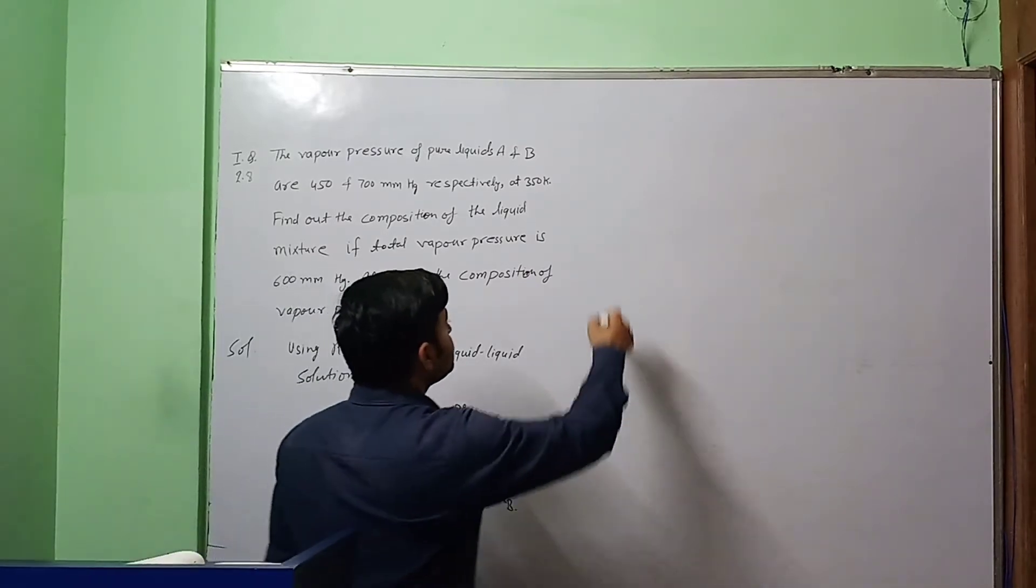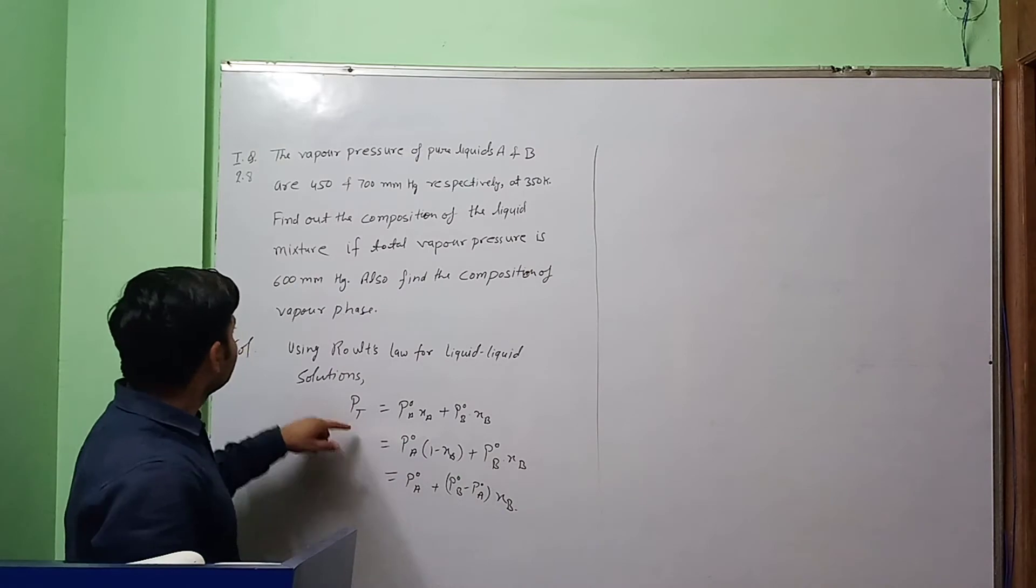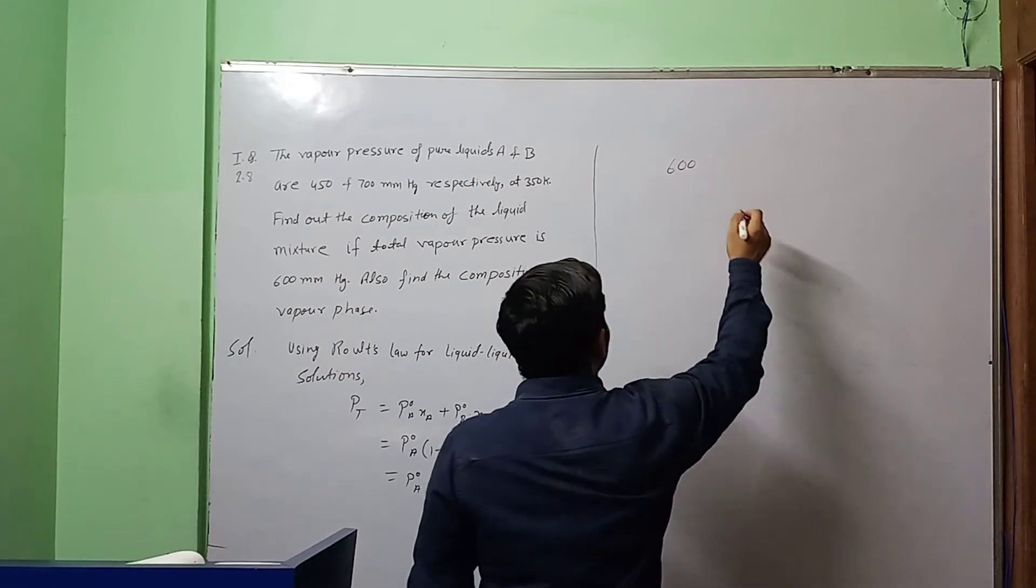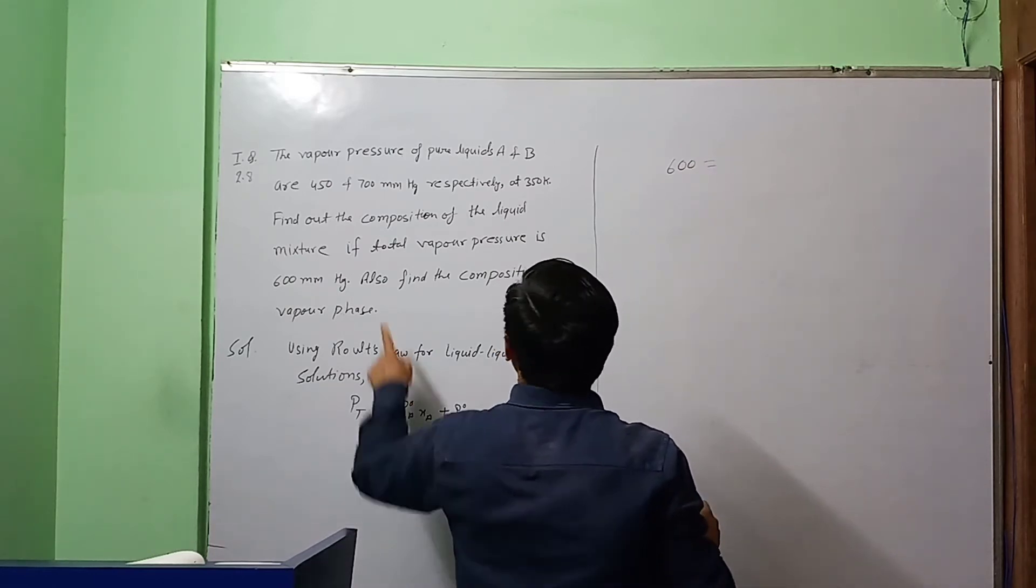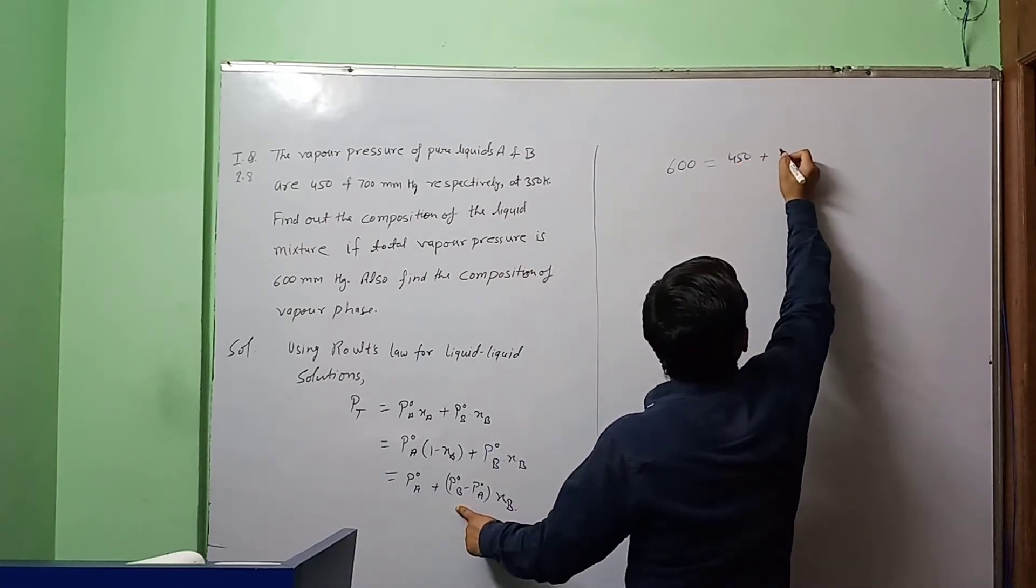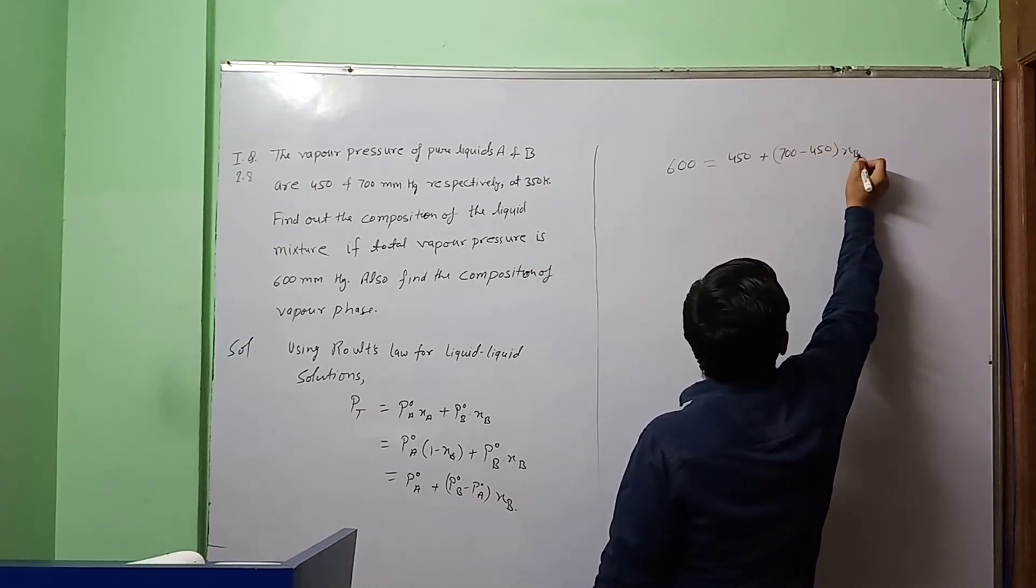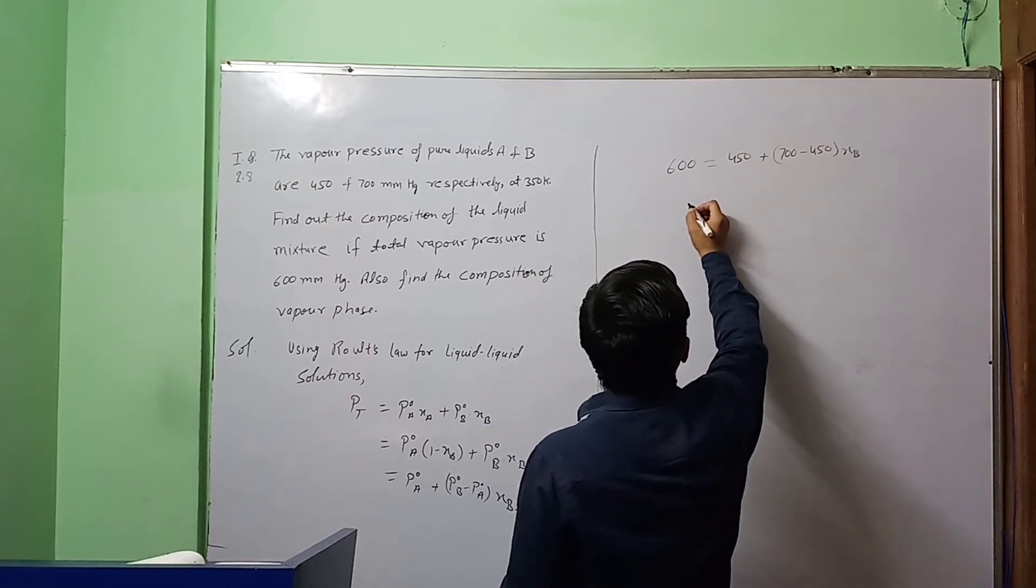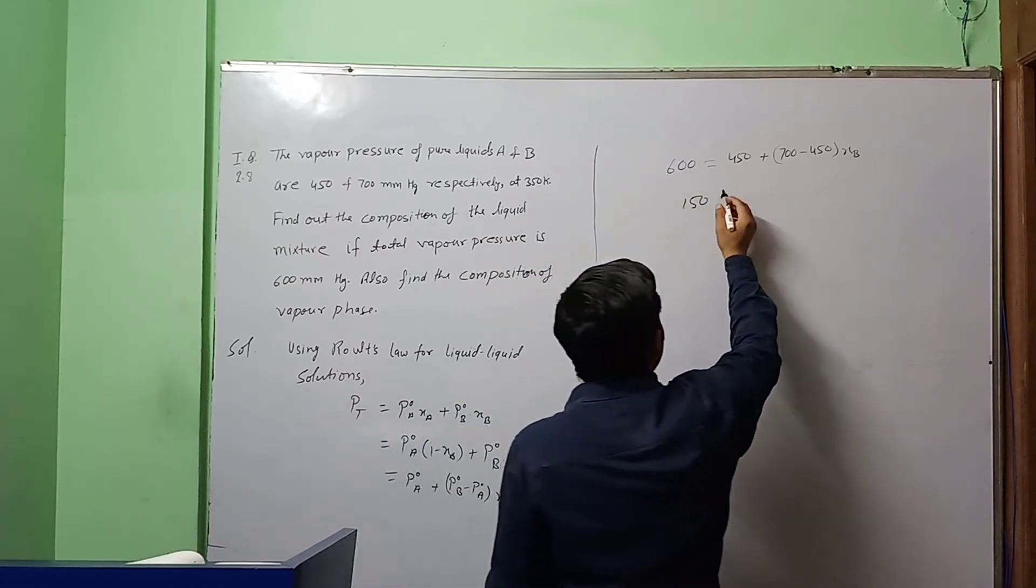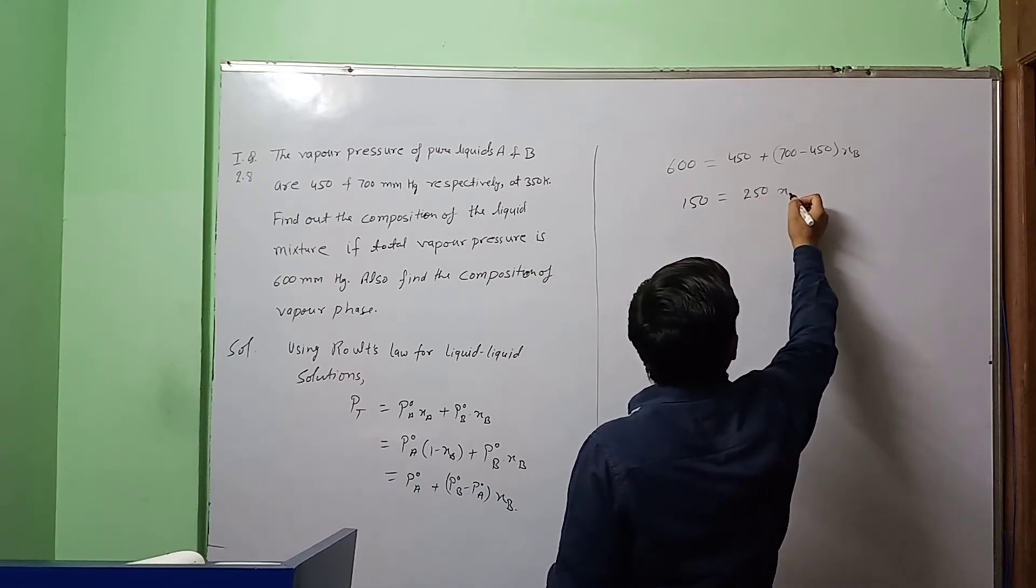Let us now put the values in the expression. Total vapor pressure of solution is given 600 mm Hg. 600 equals P0A, it is given 450, plus P0B minus P0A means 700 minus 450 into XB. We can subtract 450 from 600, we will get 150 and this we will get 250 into XB.